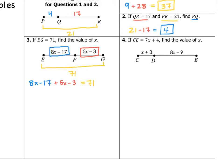Now I can solve this multi-step equation by combining like terms. 8X and 5X gives us 13X. Negative 17 minus 3 is negative 20. So we get 13X minus 20 equals 71. Adding 20 to both sides gives 13X equals 91. Dividing by 13 on both sides, I get X equals 7.